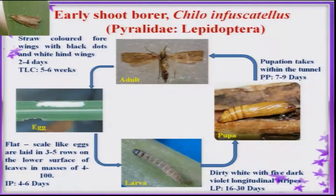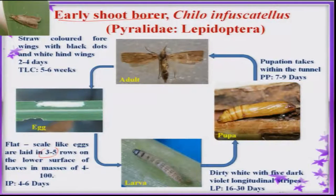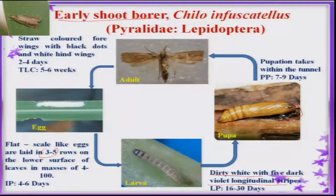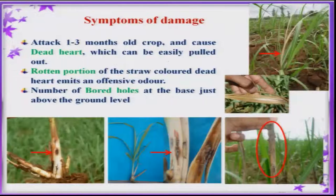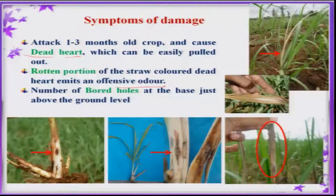Immediately after sowing or planting, the early shoot borer occurs. Eggs are laid in three to five rows in masses of four to 100, and after hatching, the dirty white colored larvae, which have dark violet longitudinal stripes, emerge. Pupation takes place in the cane itself and afterwards the adult emerges out. Because of its attack, dead hearts are produced, and from this dead heart a rotten offensive odor comes out when you pull it, and a number of holes are produced at the base of the sugarcane.